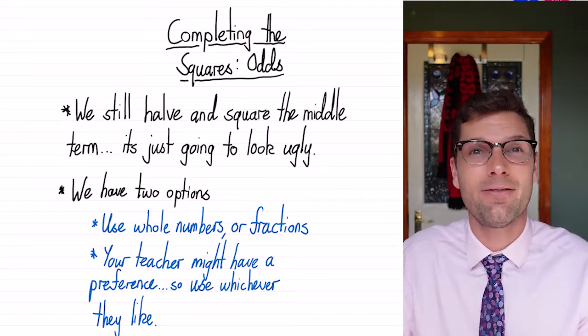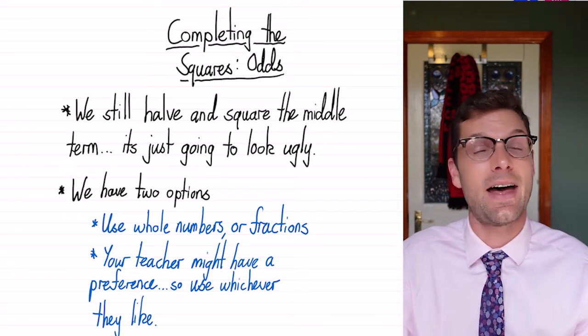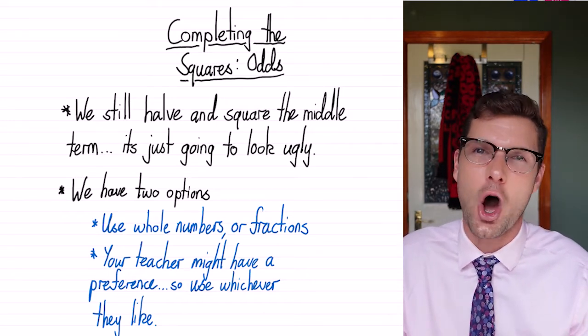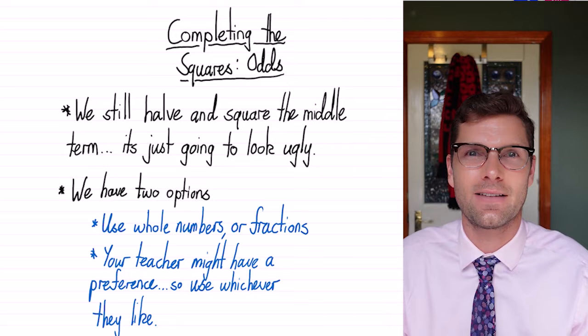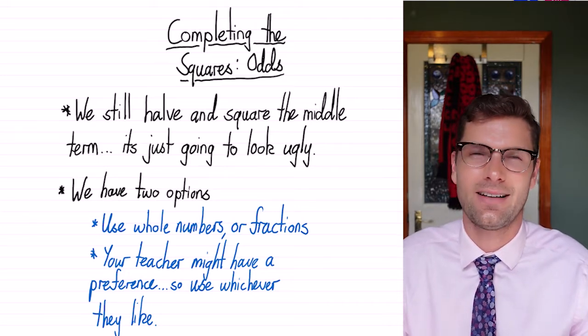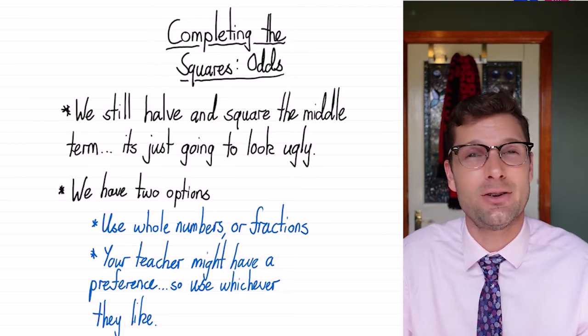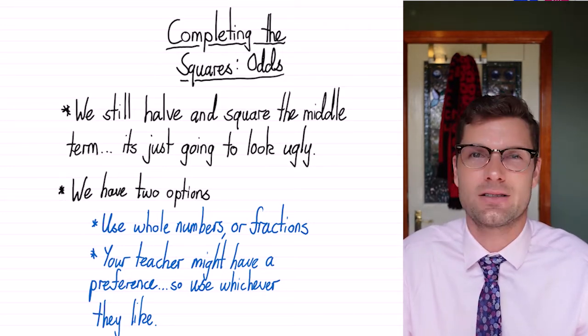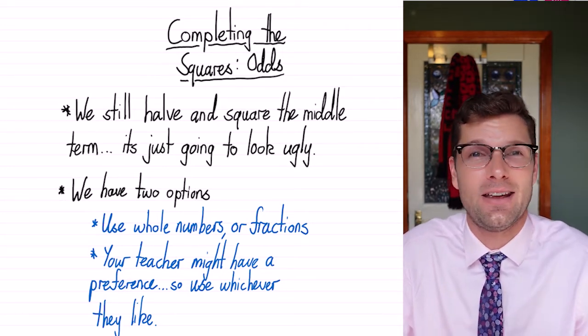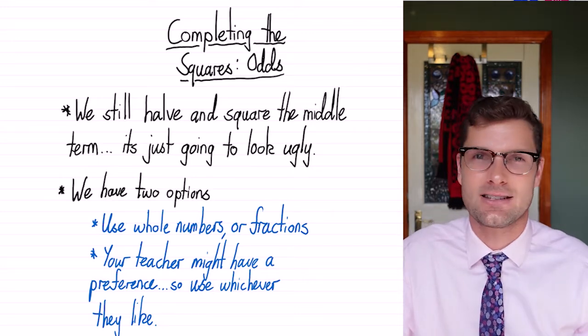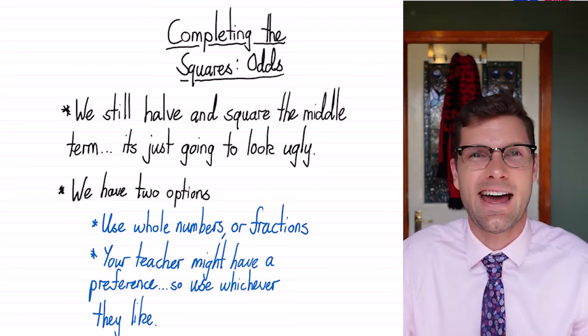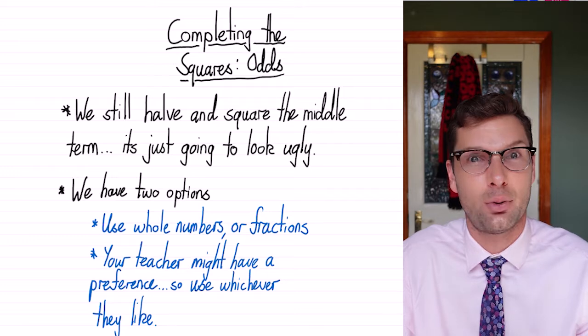So we do still have to halve and square the middle number, that is what we're doing, but if you've got an odd number like nine, the half becomes four and a half and then it gets all confusing. So really, it's the same process, it's just going to look heaps worse. Your page isn't going to be pretty, so just working it out nice and slowly, taking some time when you're setting out, will make this process pretty cruisy.